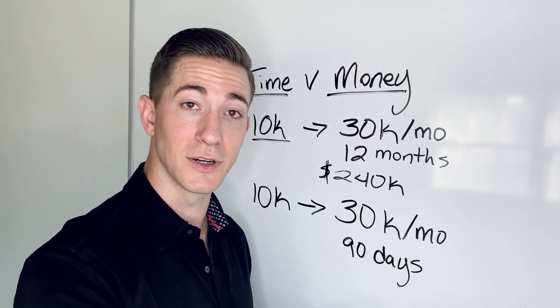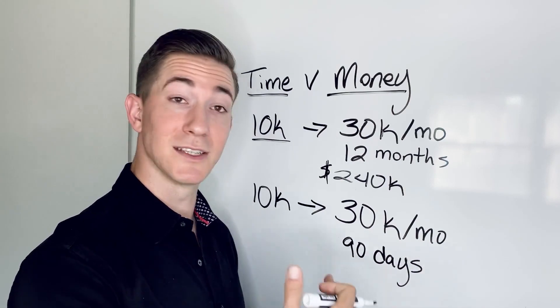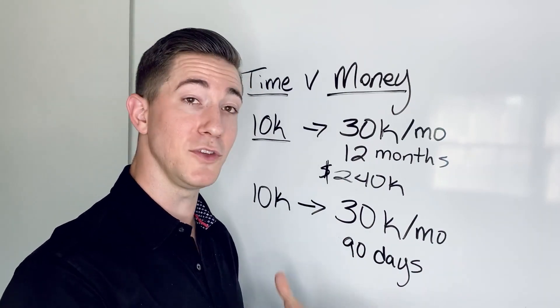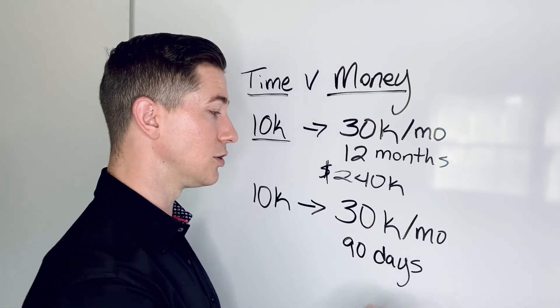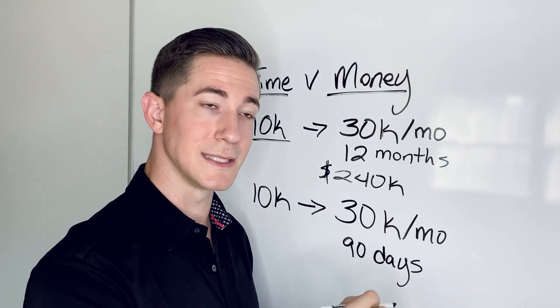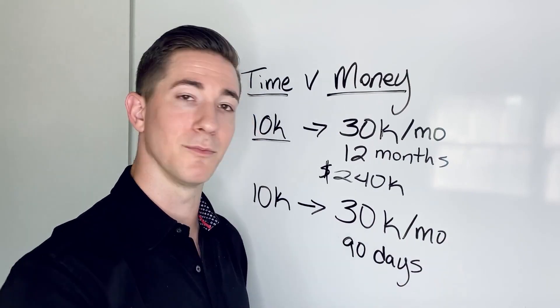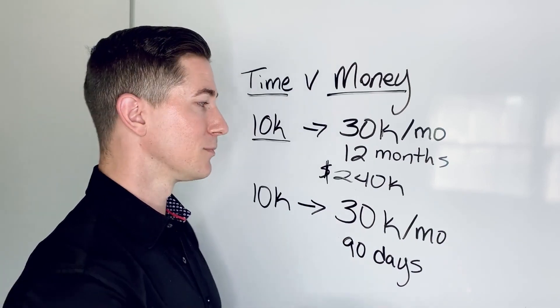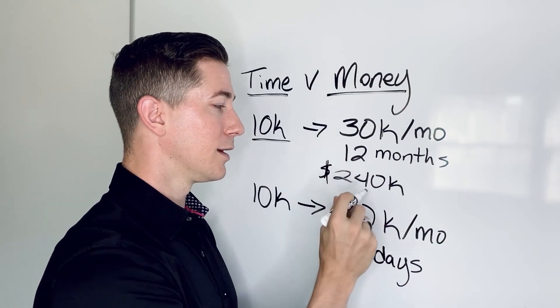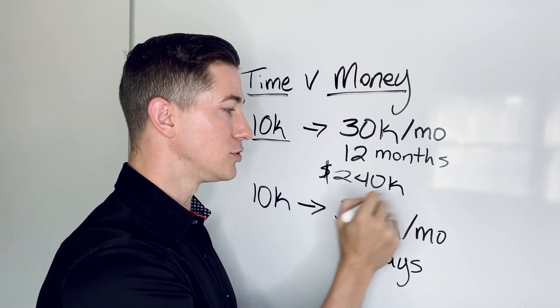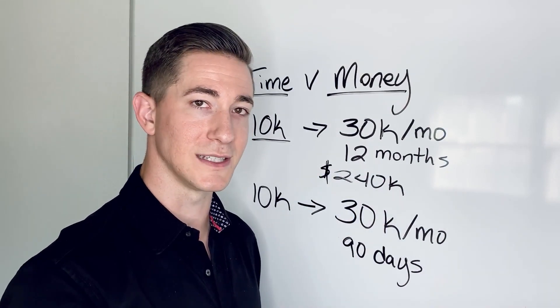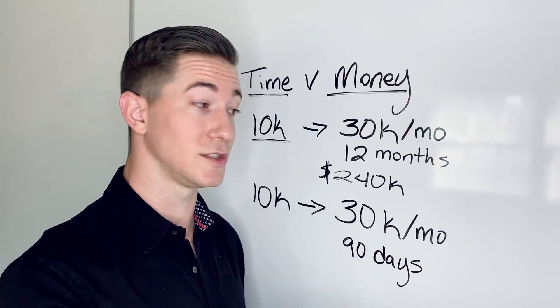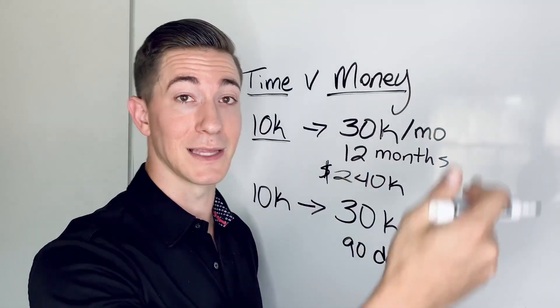Now it doesn't work out like that for every single person because a lot of people don't take the level of action they need to. But if you come in and you take the level of action that you need to, it's very realistic that you can get up to $30K. Many of our students are doing significantly more than this, but that's very realistic. And you are gaining your $240,000 essentially if you just stayed at $30,000 per month, which you're going to have the tools to scale infinitely higher than that.